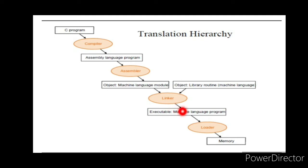The linker is linked to the system library. If you are using the hash include, you can convert it into machine language. You can see the header file included. The linker also links a particular module into the system library. It takes object modules from the assembler as input and forms executable files as output for the loader.